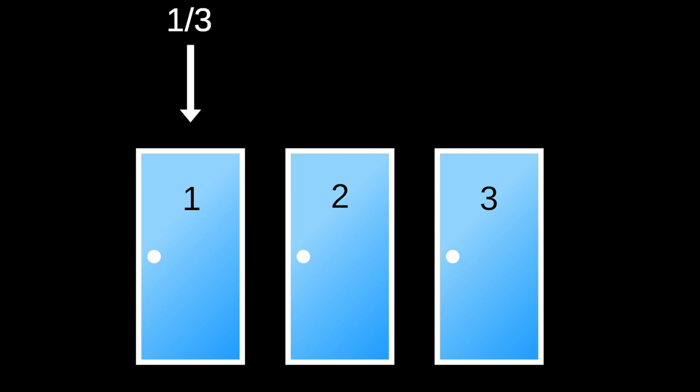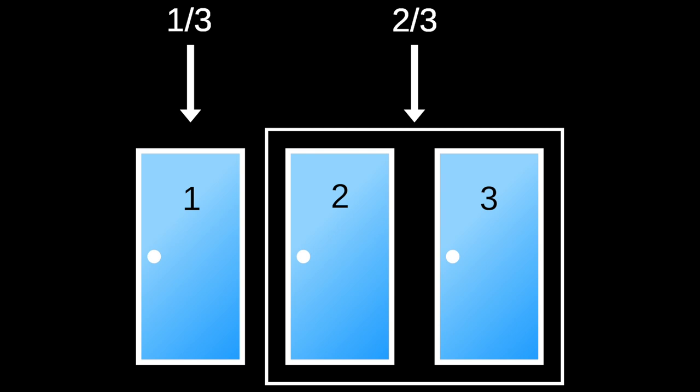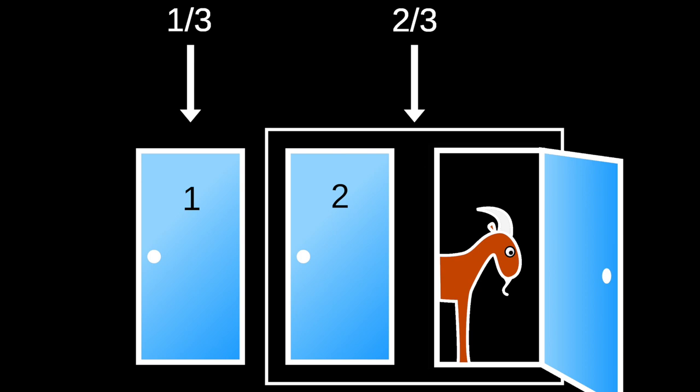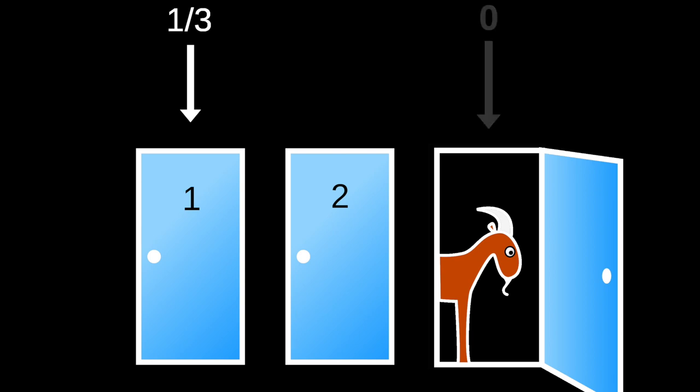With that in mind, let us look closer at the probabilities. There is a one-third probability that door one, the door chosen by the player, has the car. The remaining two doors have a two-thirds probability that the car is behind one of them. When Monty opens door three to reveal the goat, nothing has changed about these two probabilities. But we have more information about door three. We now know that its probability is zero, but the probability of door one having the car remains at one-third. This leaves the probability of door two having the car at two-thirds.